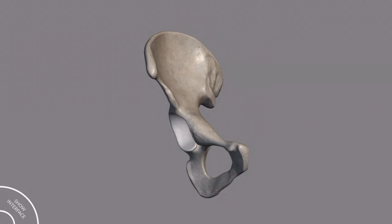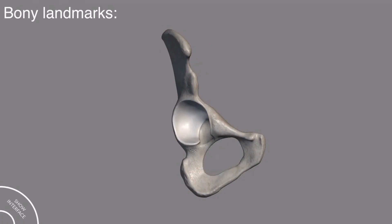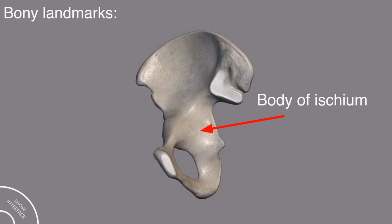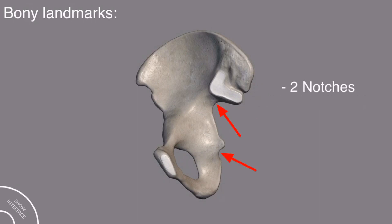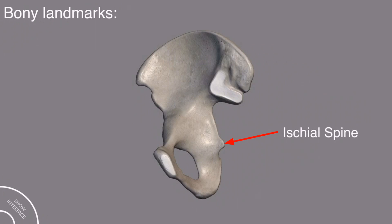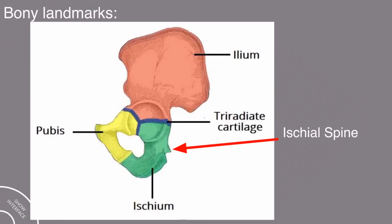Now let's come to the bony landmarks of the hip bone. This foramen on the hip bone is the obturator foramen. This is the body of the ischium. There are two notches on the posterior side — this one is the lesser sciatic notch, while this one is the greater sciatic notch. Between the lesser and the greater sciatic notch, this spine is called the ischial spine, because it is located in the part of the ischial bone.